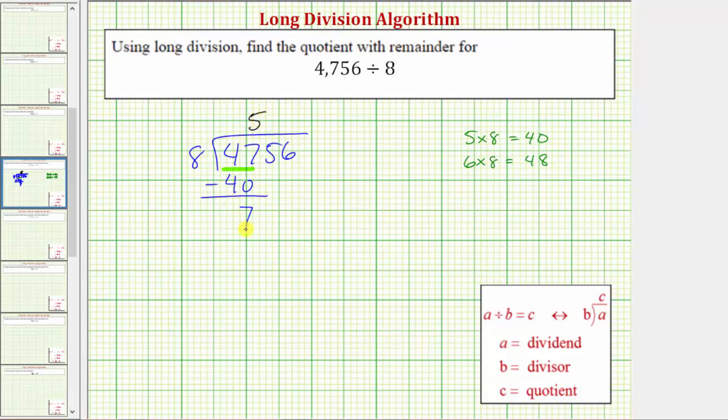The next step is to bring the next digit in the dividend down, which is the 5. If we bring the 5 down, notice how now we have 75. Now we need to determine how many eighths there are in 75. Well, 9 times 8 is equal to 72. 72 is less than 75,